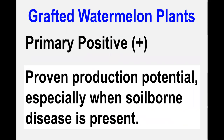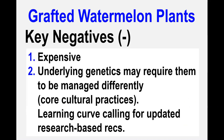Grafted plants are known to have high production potential, especially when specific soil-borne diseases are present. However, grafted plants are also known to cost more than standard non-grafted ones and to have underlying genetics that may require them to be managed differently in core cultural practices such as in-row spacing, fertility, irrigation, and so forth. These adjustments may be needed in order to provide a maximum return on investment in grafted plants, and this creates a learning curve calling for updated production recommendations.